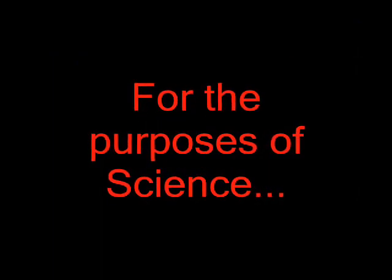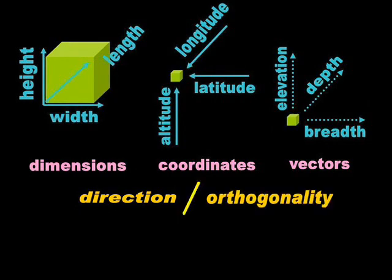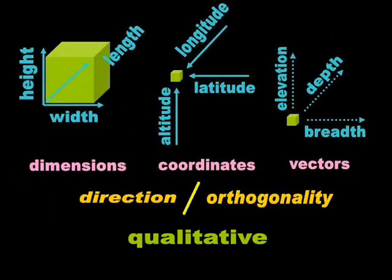In science, dimensions, coordinates, and vectors have only two attributes: direction and orthogonality. Direction and orthogonality are strictly qualitative concepts. We don't need to learn trigonometry to understand that a cross has one stick perpendicular to another.